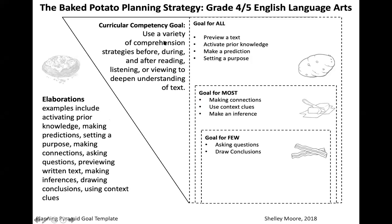This one is a curricular competency goal, and the elaborations are part of the goal itself. On the website, it gives you examples — or sometimes nothing — so we pulled it apart ourselves. The goal is: 'Use a variety of comprehension strategies before, during, and after reading, listening, or viewing to deepen understanding of text.' The examples include prior knowledge and making predictions. This one caused a lot of debate on the team — what do you actually need to do first before something else? What is the most accessible piece? And that might differ by teacher, but that's okay. If kids can confidently do half of these things, they're going to be okay moving forward, because it's the exact same goal the next year and the year after.